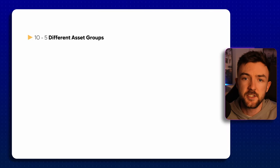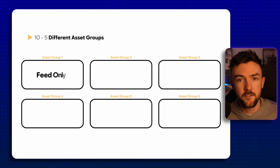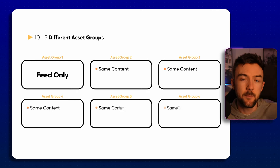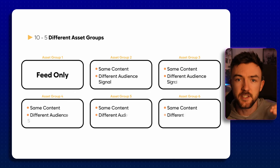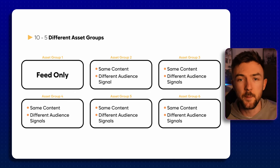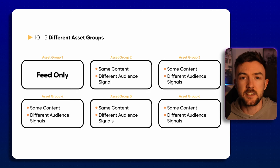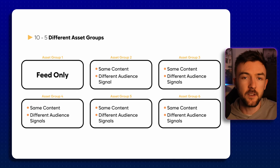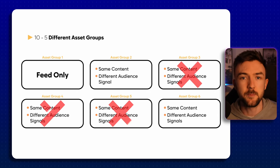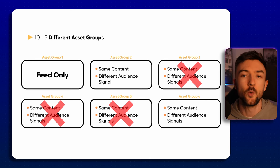For a one-product Performance Max campaign, I start with five to ten different asset groups. One of those is feed-only, and the rest have exactly the same content in each asset group — same images, same text headlines and things like that. The only difference in each asset group is the audience signal I'm using, so in the early stages you can identify clear winners in terms of which audience signals are working best for your business.